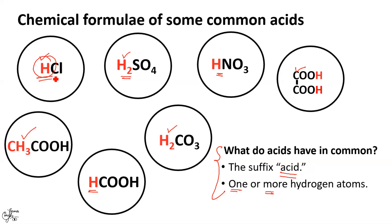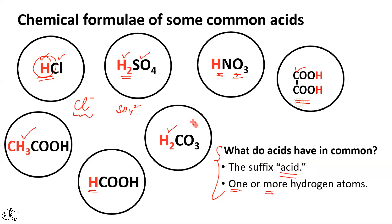By looking at these formulae, we can also see that all these acids have H as the common cation. Cations are positively charged ions whereas anions are negatively charged ions. So here you have chloride ion, here sulfate ion — cl carries a minus charge, giving us chloride anion, sulfate anion, nitrate anion, oxalate anion, carbonate anion, and acetate anion. All of them have the common cation hydrogen, whereas the anion differs.